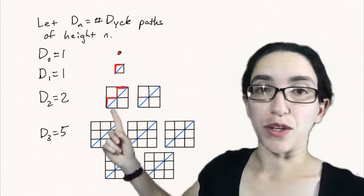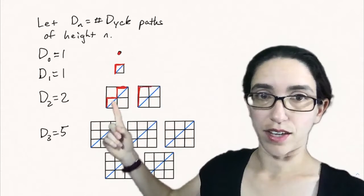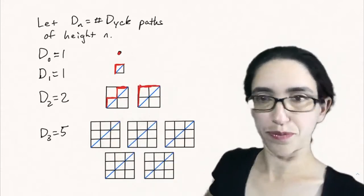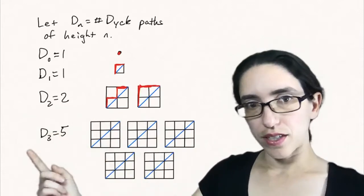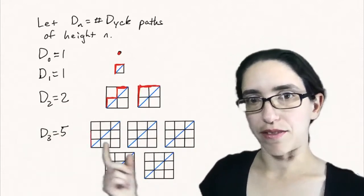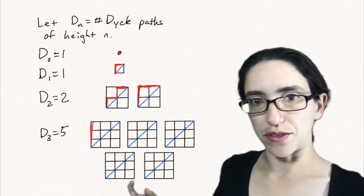For the 2 by 2 square, you have two paths that stay above the diagonal: the zigzag and the one that goes up and then over. So D sub 2 is 2. Then I claim that D sub 3 is 5.